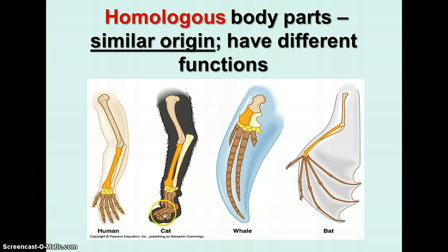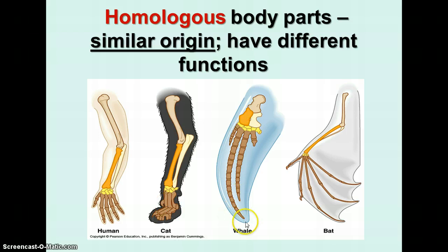You see the same sorts of bones in all these different animals. They're organized in the same direction and come from the same kind of origin, but they are shaped a little differently because the limbs have different functions. The human arm is for grasping and holding, cats climb and run, whales use their fins to swim, and bats use their forelimb for flight. So homologous body parts have similar origins but different functions, leading us to believe they probably had a common ancestor.